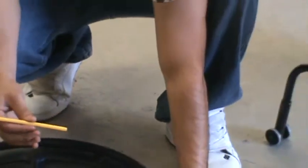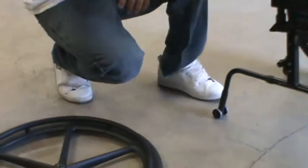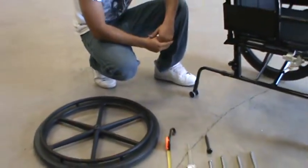So now we know that the axle length that this chair and wheel take will be 4.2 inches.